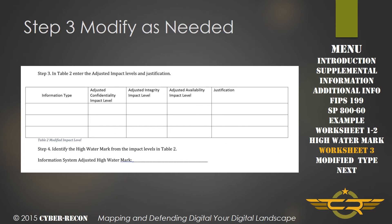Part three, or step three of the worksheet, allows the information impact levels to be modified based on organizational input. It's good to note that these modifications would have to be approved by the authorizing official, but it gives the organization the ability to be more flexible in defining the information types' impact levels. For example, an impact level of high could be reduced to moderate, or low could be increased to high, based on the types of threats, the system or information types, or any number of variables based on how the organization views each information type as applied to that system or the organization as a whole.